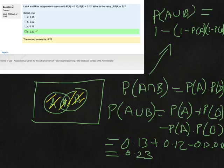And that's going to be 1 minus, and what's 1 minus probability of A? That's going to be 0.87. And 1 minus the probability of B is going to be 0.88.